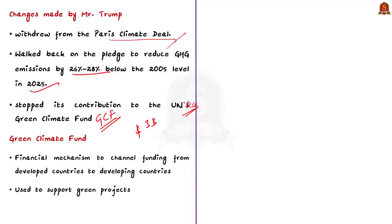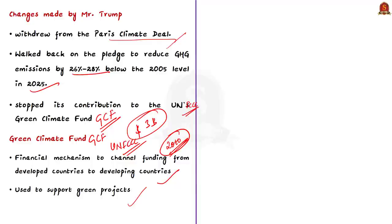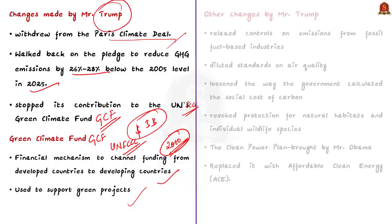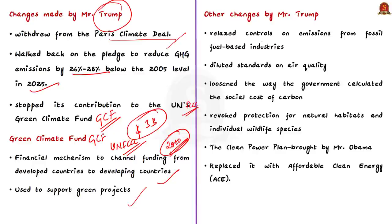GCF is a financial mechanism under UNFCCC to channel funding from developed countries to developing countries to help them in mitigating climate change and adapting to disruptions arising out of climate change. This fund was set up in 2010, and the US promised $3 billion to it, but the Trump administration stopped contributions. Apart from stopping funding, the Trump administration also relaxed controls on emissions from fossil fuel-based industries, diluted standards on air quality and vehicle emissions, loosened the calculation of the social cost of carbon, and revoked protection for natural habitats including the Arctic region — close to 100 environmental rules and regulations were diluted.